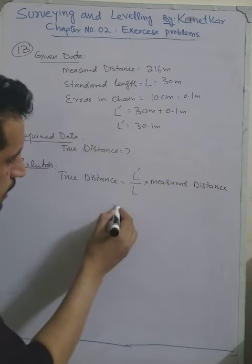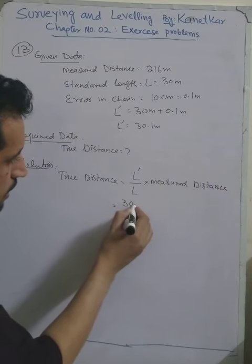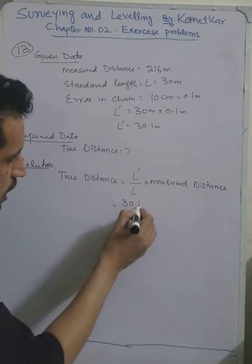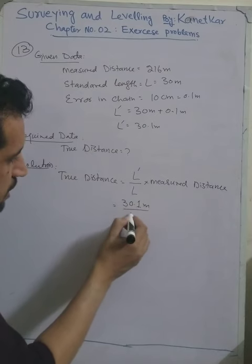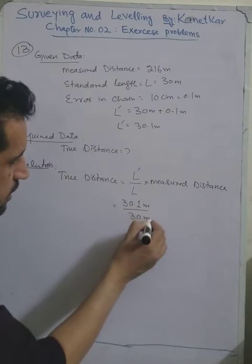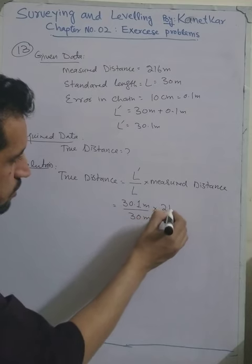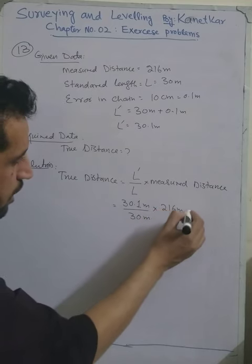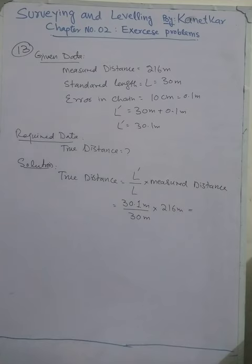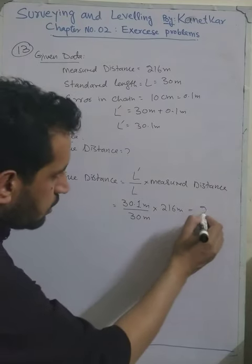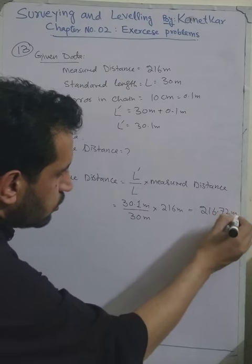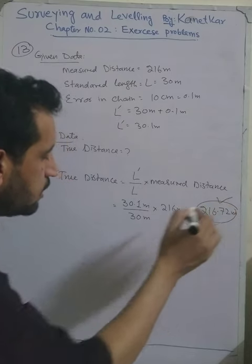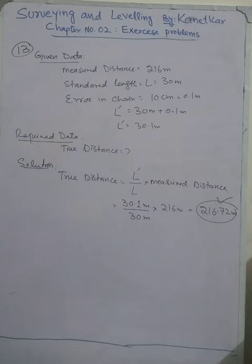The length of the chain during measurement was 30.1 meters, the standard length is 30 meters, and the measured distance was 216 meters. Solving this equation gives us 216.72 meters, which is the true distance between the two points.